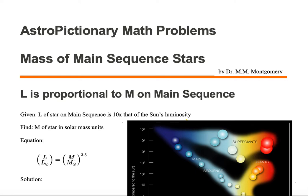In this astro-pictionary math problem, we want to solve for the mass of a main sequence star. We're given the luminosity of the star on the main sequence is 10 times that of the sun's luminosity.